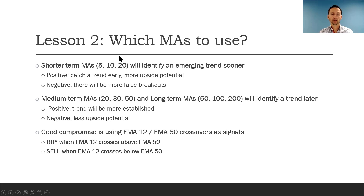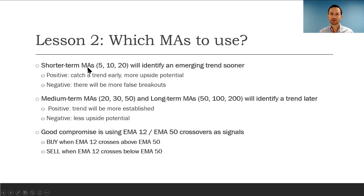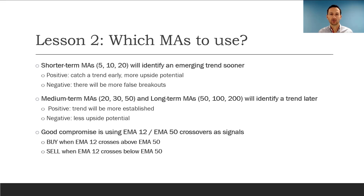Which time horizon should be used? The shorter moving averages — and this applies to both the simple and the exponential moving averages — the shorter time horizon, so in this case the 5, 10, 20-day, will identify an emerging trend sooner. That's the positive: using the shorter-term moving averages will help you catch a potential trend early, and that leaves more upside potential.